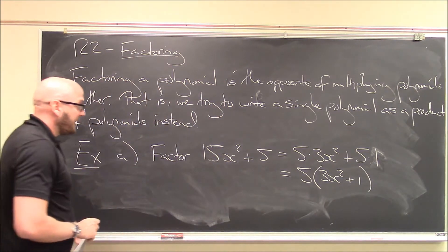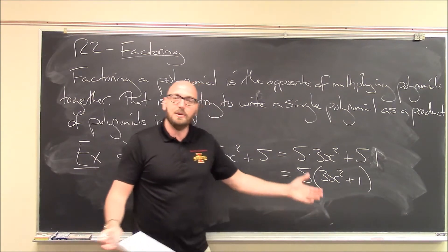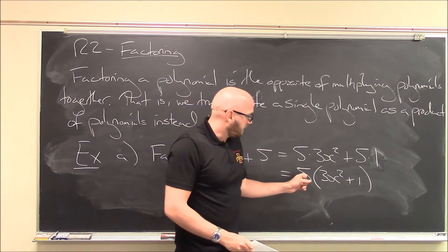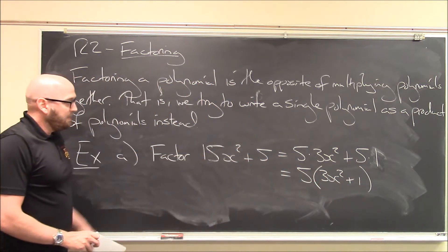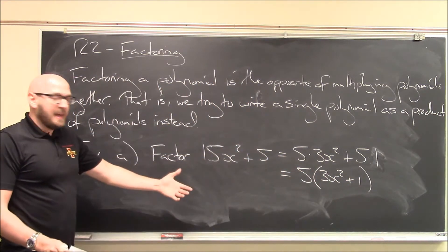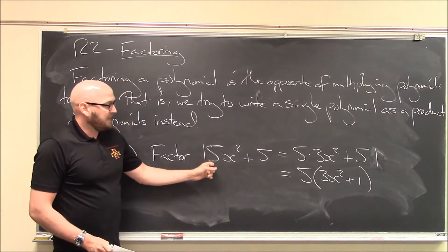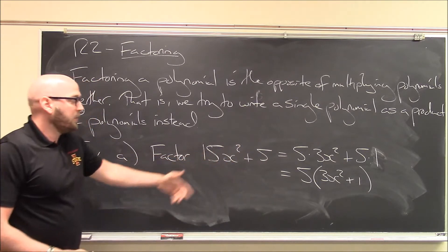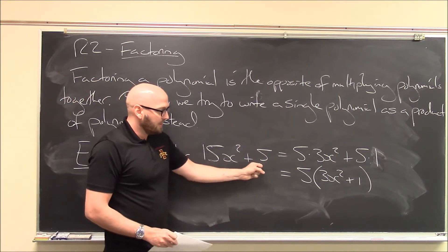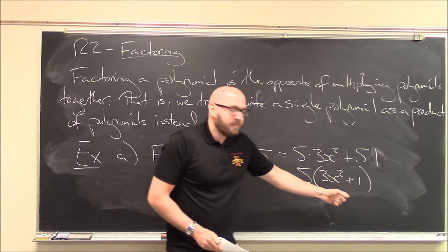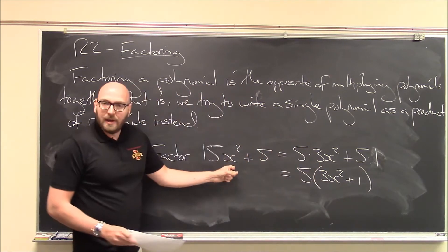I've pulled this common divisor of 5 out of both terms. By distribution, this is just 5 times the leftover polynomial, 3x squared plus 1. And this is factored — it's now a product of two polynomials: 5, which is just a constant term, times 3x squared plus 1. If you were to multiply these together and distribute, you'd get right back to 15x squared plus 5. So it really is the opposite of multiplying polynomials together.